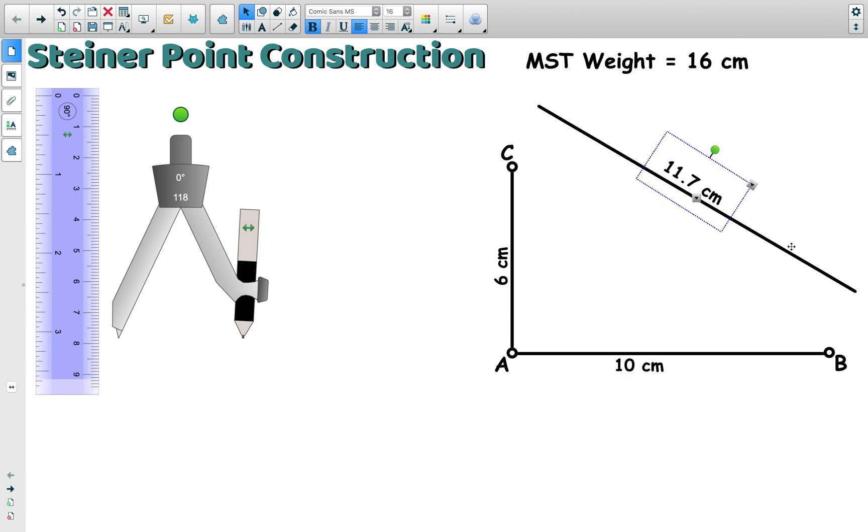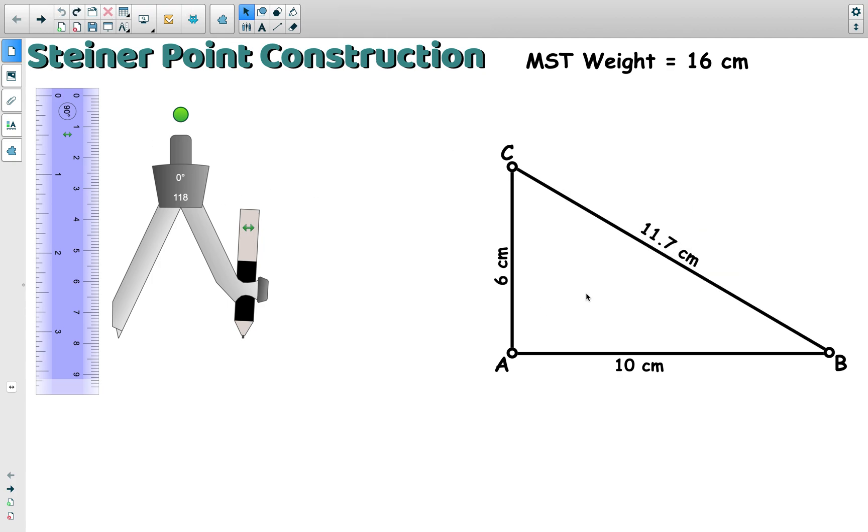And if we take the most expensive edge away, we're left with the two cheaper edges which gives us what's called a minimum spanning tree. And we can see that 10 plus 6 is 16 centimeters—that is the minimum spanning tree. But we want to do even better than that, so we're going to look at our network and construct a Steiner point to create a minimum network.